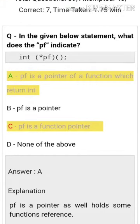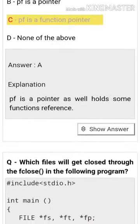Hi guys, welcome back to Casa's week. This is Vidya. I want to show you C programming tricks from previous questions, very important guys. In the given statement, what does pf indicate? The answer is: pf is a pointer that holds some function's reference.